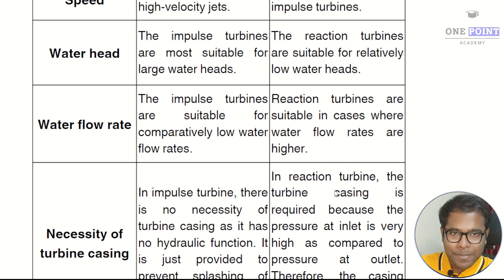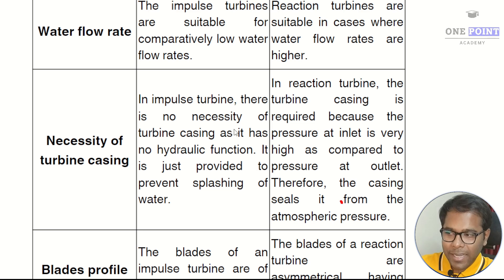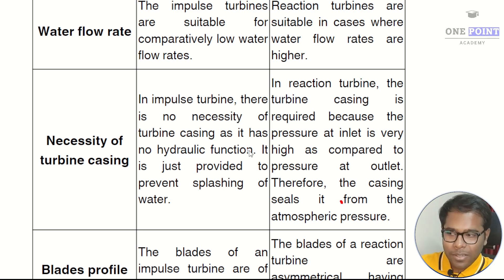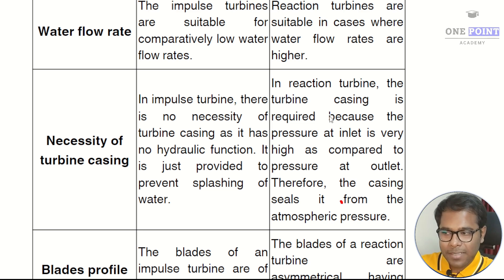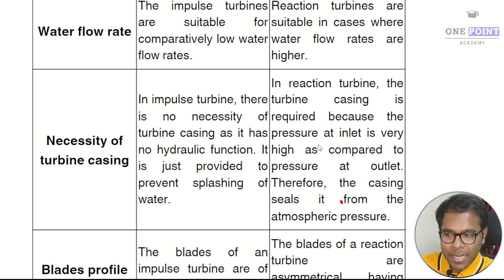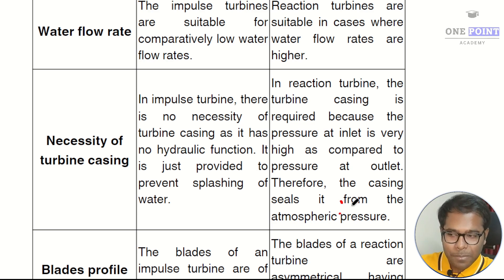The next difference is based on the necessity of tubing casing. In an impulse turbine there is no necessity for any tubing casing as it has no hydraulic function — it is just provided to prevent splashing of water. In a reaction turbine the tubing casing is definitely required because the pressure at the inlet is very high compared to the pressure at the outlet, and therefore the casing seals it from atmospheric pressure.